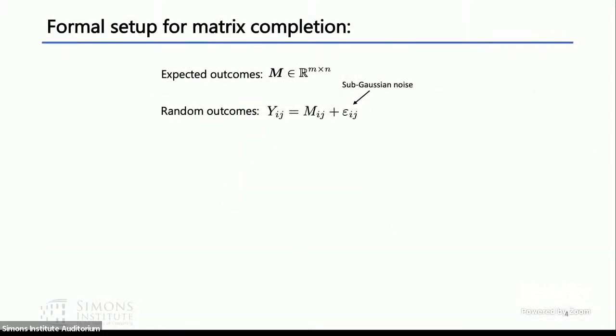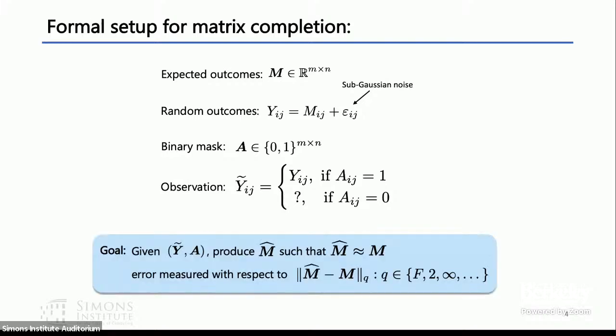The goal across many of these different applications is imputing missing entries and denoising observed entries. The challenge when we try to think of all these problems collectively through matrix completion is that these different applications induce very different sparsity patterns. So what's the setup for matrix completion? You have some matrix M, those are your expected outcomes. If you observe it, it's observed with some noise, so Y_ij equals M_ij plus epsilon_ij. There's some binary mask matrix A. If A_ij equals one then you observe Y_ij, and if A_ij equals zero then it's not observed, it's missing. Given Y tilde and A, the goal is to produce M hat such that M hat is close to M. There are many different ways we can define closeness. Probably the most standard is the Frobenius norm, which is the average across all entries, but there are stronger notions of norm like the infinity norm, which is the recovery of any particular entry.